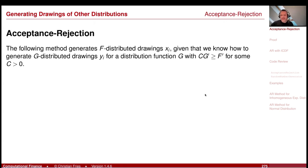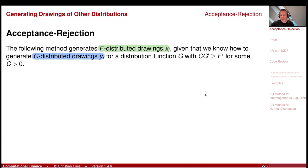The following method generates an F-distributed drawing — this is our target. Given that we know how to generate a G-distributed drawing, which is our source. The F-distributed variable is called X_i, and G-distributed drawings are called Y_i. So I can generate a G-distributed sequence, given that there is a condition: a constant C times the density g of the random variable Y is greater than or equal to the density of the random variable X, the F-distributed one, for some constant C larger than zero.